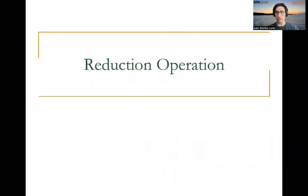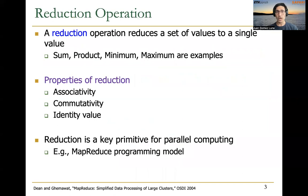Before we go into the details, let's very quickly recap what we covered in the previous lecture: the reduction operation. A reduction is an operation that reduces a set of values to a single value. It has certain properties: associativity, commutativity, and an identity value.